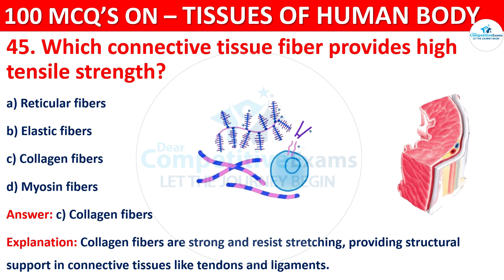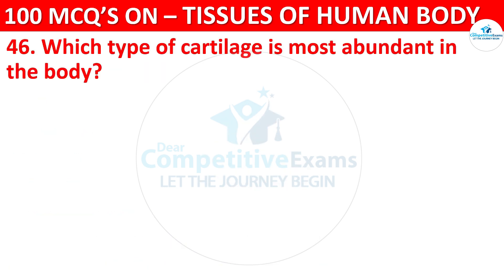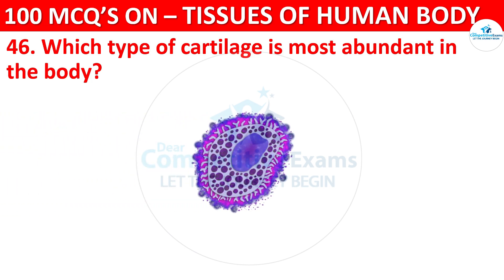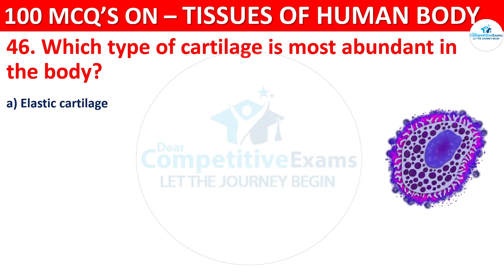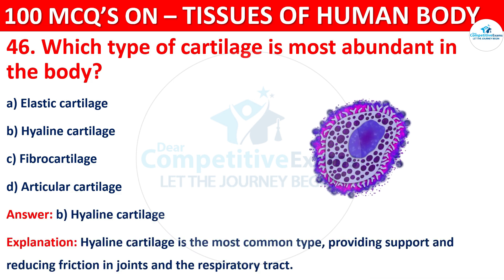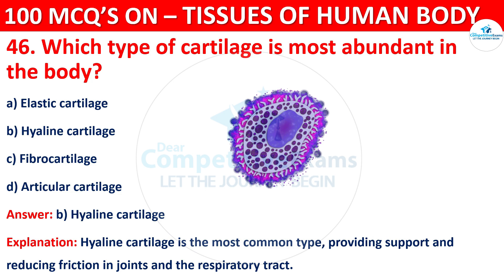Question number 46. Which type of cartilage is most abundant in the body? Options are Elastic Cartilage, Hyaline Cartilage, Fibrocartilage, or Articular Cartilage. The correct answer is B, that is Hyaline Cartilage. Hyaline cartilage is the most common type, providing support and reducing friction in joints and the respiratory tract.